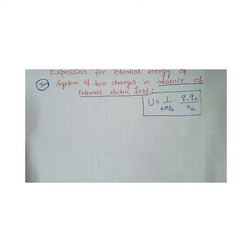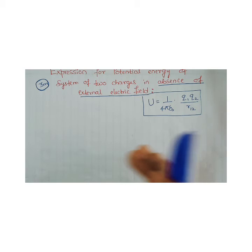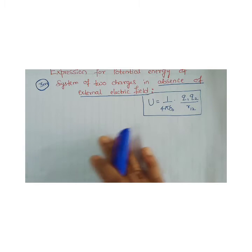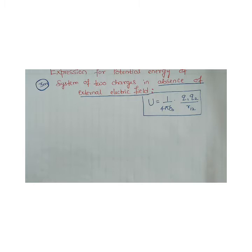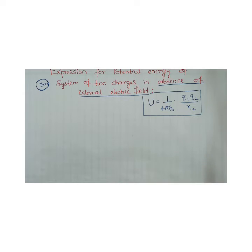So we will start. Initially the charges will be present at infinity, and the external field we are taking here is zero. Initially the two charges Q1 and Q2 are present somewhere at infinity — that is the initial configuration. We know that in the initial configuration, UI is zero; hence UI at infinity is zero. That is what we have considered, and you need to find UF, that is the final potential energy.